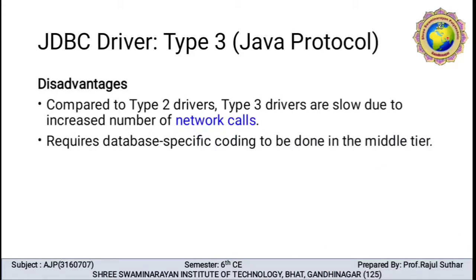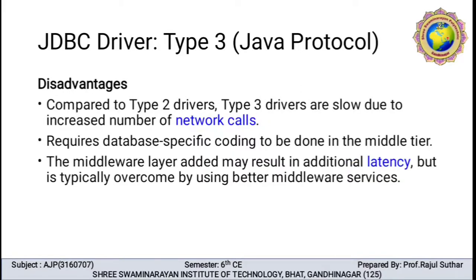It requires database-specific coding to be done in the middleware middle tier. The middleware layer added may result in additional latency, but this is typically overcome by using better middleware services. It requires supporting server applications to install and monitor the connection. The database comes from the backend server, which makes traversal of the record set a big, time-consuming operation — it requires maximum time to transmit data from one side to another.